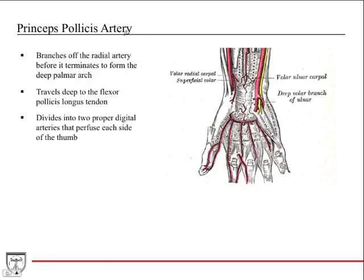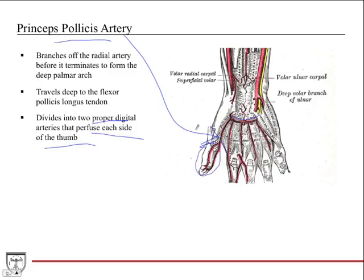First, the princeps pollicis artery — pollicis means thumb. It comes off the radial artery before it terminates into forming the deep arch. It travels deep to the flexor pollicis longus tendon and divides into two proper digital arteries that perfuse each side of the thumb. You can see it coming along here and splitting into two arterial branches that perfuse both sides of the thumb.